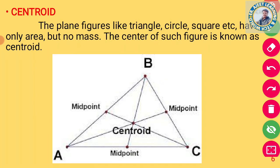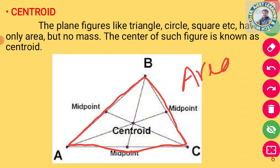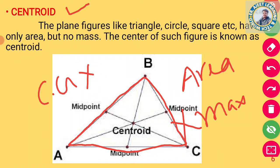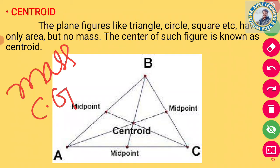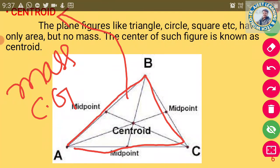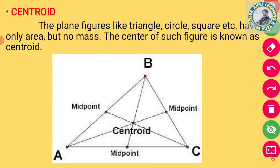अब centroid देखते हैं। Centroid क्या होता है — that is only for a plane figure. उसका कोई mass नहीं होता। जैसे कि एक triangle lines से बना है, इसमें सिर्फ area है, कोई mass नहीं। अगर mass नहीं है तो center of gravity नहीं, centroid होता है। अगर object में mass है तो center of gravity निकालते हैं, और अगर सिर्फ area है, mass नहीं, तो centroid निकालते हैं।